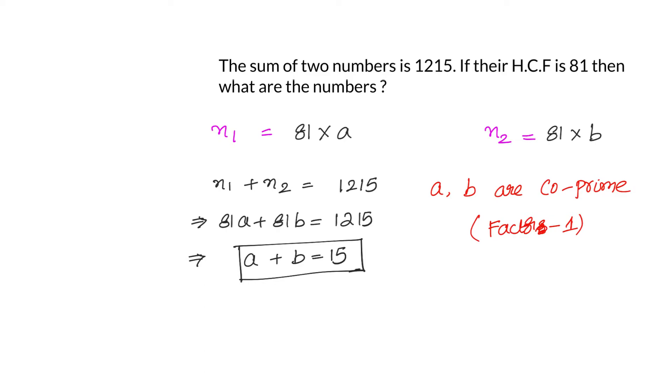So suppose let us take a equals to 1, b value will be 14. If I take a equals to 2, b value will be 13. I cannot take 3 and 12 because they are not co-prime. We have 4 and 11. 5 and 10 will not work out. 6 and 9, no. 7 and 8, yes.